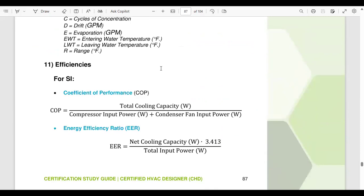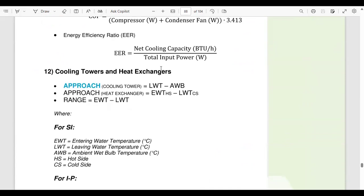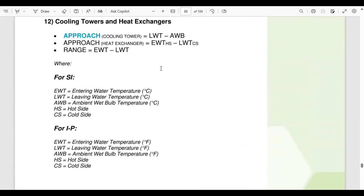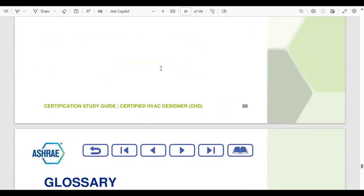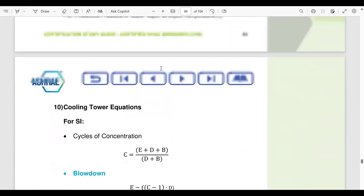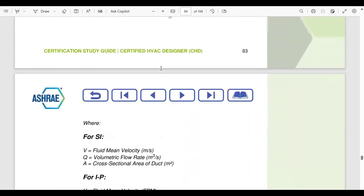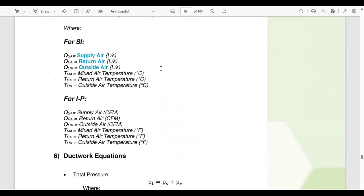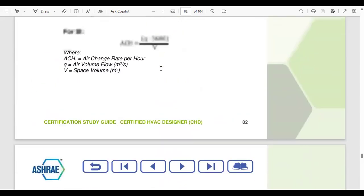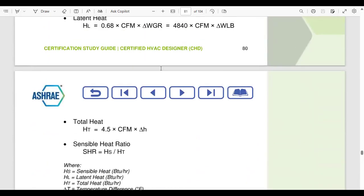Then we get equations for effectiveness, COP, and ER. All these cooling tower and heat exchanger equations are here. So almost all the math and equations relevant to the exam are provided here. There are a few more equations—I think two or three more—that are required for the exam as well.